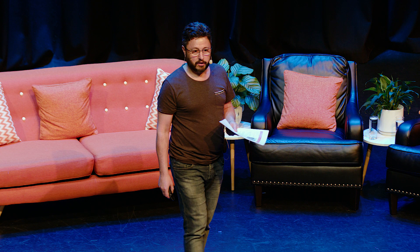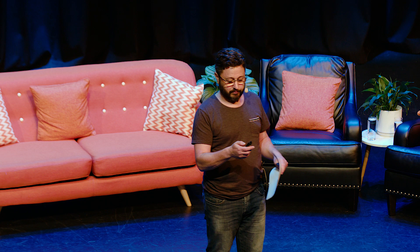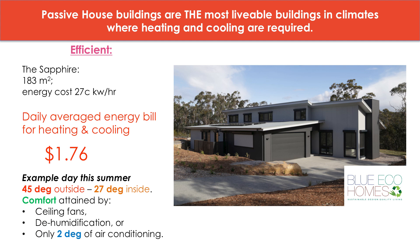The vast majority of the year you won't need any heating or cooling. But for those extreme times — 40 degrees plus for a week — when you want to use some air conditioning, the cost of that divided by 365 gives you this number. As an example, there was a day this summer where it was 45 degrees outside and inside without any cooling it got to 27 degrees.